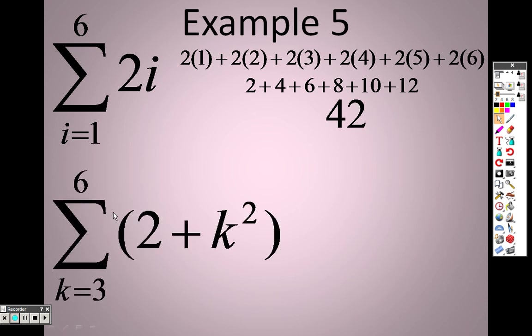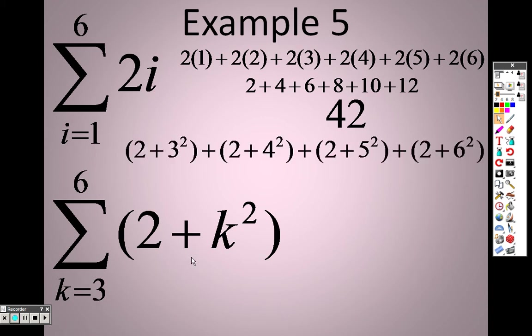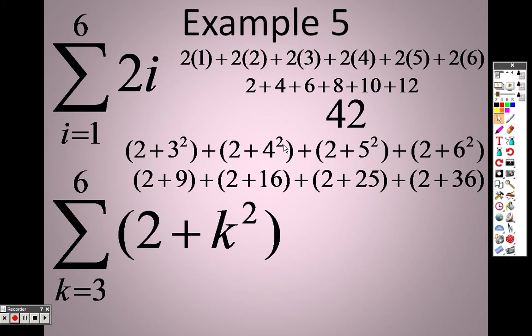The sum down here means I start at 3 and I end up plugging in a 6. So plugged in a 3, that's 3 squared. Plugged in a 4, that's 4 squared. Plugged in a 5, that's 5 squared. Plugged in a 6, that's 6 squared. So 3 squared is 9. 9 plus 2 is 11. 4 squared is 16 plus 2 is 18. 5 squared is 25 plus 2 is 27. 36, 6 squared is 36 plus 2 is 38. Add all those together to get 94.